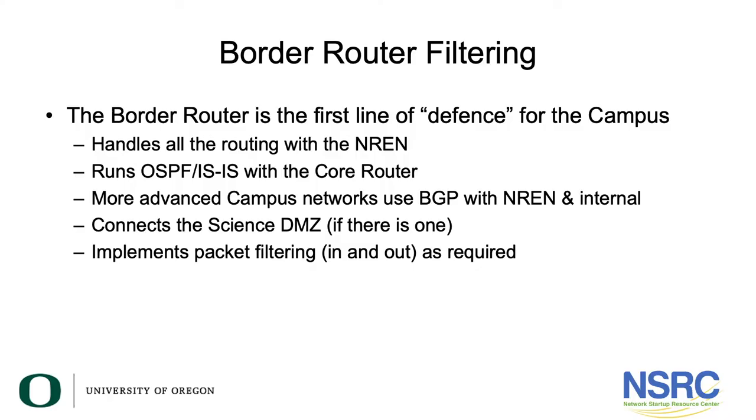Now let's look at the border router and what filtering we require there. The border router is the first line of defense for the campus. It handles all the routing with the NREN and runs OSPF or ISIS if you prefer with the core router.